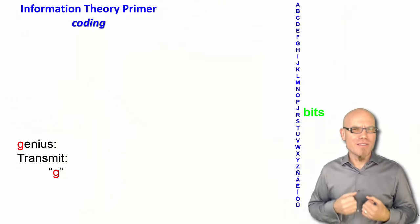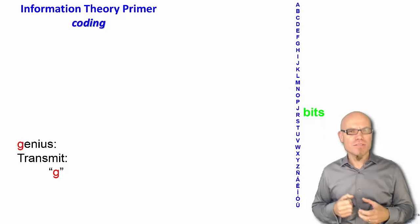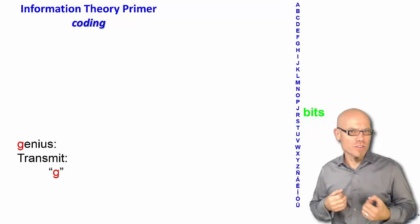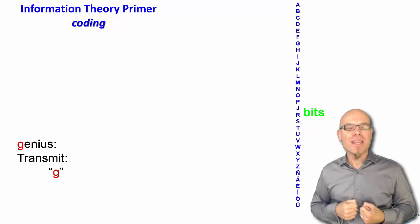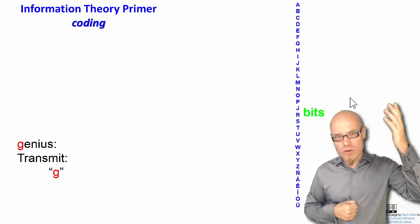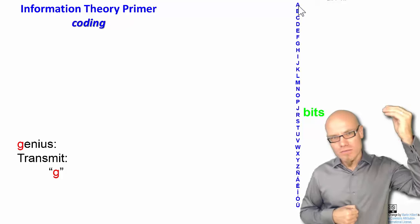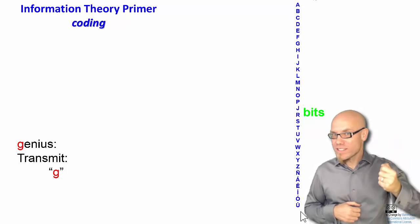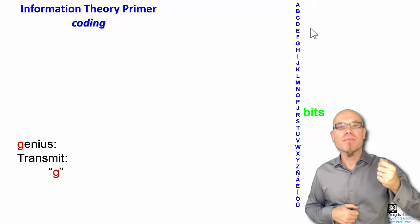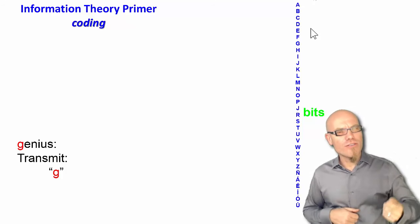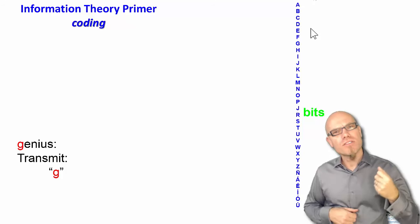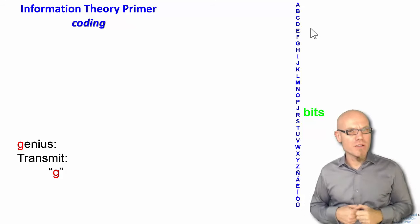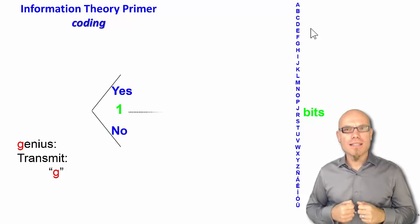Let's look at a more applied, technical example. You want to communicate the word genius. Let's start with communicating the letter G. You have your uncertainty here. You have 32 letters. You don't know which letter you're going to receive. Let's suppose they're all uniformly distributed. So the most fundamental way you can go about coding that is you play the game of 20 questions.